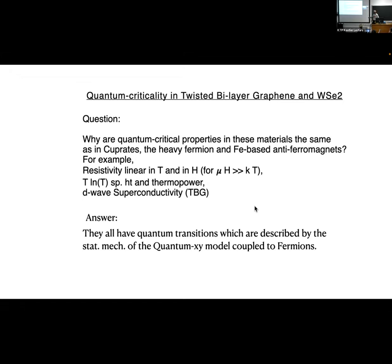The order parameters are different, but at quantum criticality, most famously, they have a resistivity which is linear in temperature or in magnetic field for magnetic field much larger than temperature. In the case of the cuprates, in the case of the cuprates and heavy fermions and to some extent iron-based antiferromagnets, there are a lot more experiments than in tungsten diselenide and twisted bilayer graphene, simply because of availability over the 30-year period of very high quality crystals and armies of experimentalists and theorists to mislead them. In particular, I want to stress that near quantum criticality, in the case of the cuprates and the heavy fermions, the specific heat is T log T.